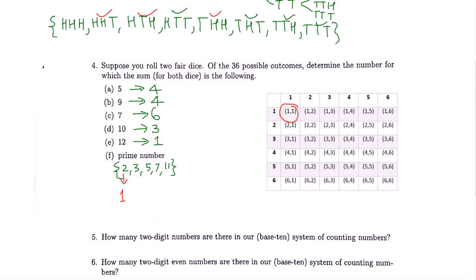To get a sum of 3: (2,1) and (1,2) — so there are 2 ways. For a sum of 5: (4,1), (3,2), (2,3), (1,4) — 4 ways. That was already done earlier as well.